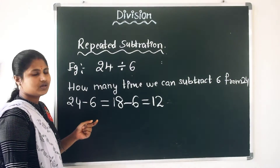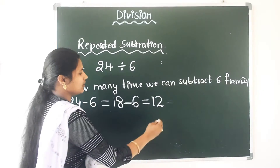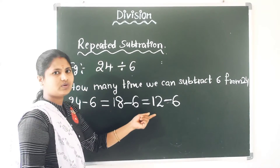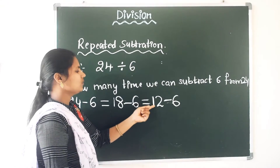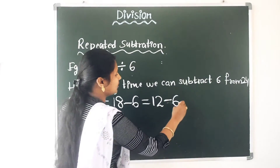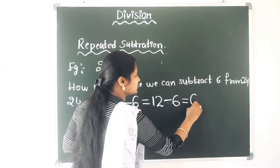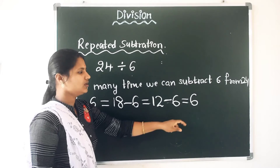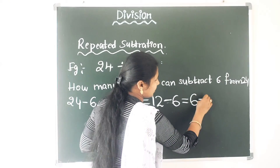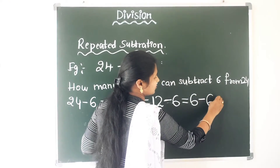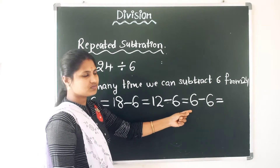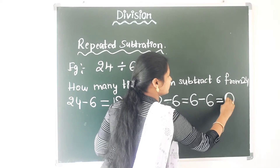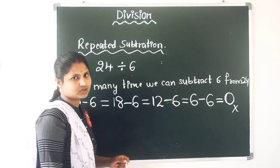12 mangoes are left. Now I am subtracting 6 mangoes from 12. 12 minus 6 is nothing but 6 — again 6 mangoes are left. So subtract again: 6 minus 6 is nothing but 0. Here no mangoes are left.